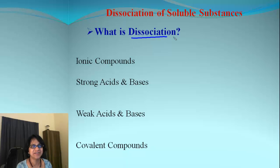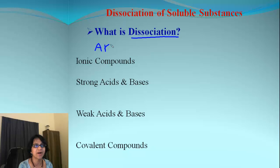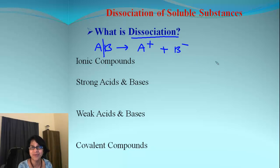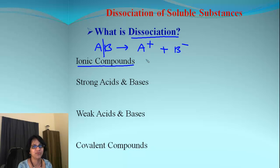What exactly do we mean by the term dissociation? It means splitting a compound into its corresponding ions. So if you have a compound A and B, when that dissociates we end up getting a positive ion A+ and a negative ion B−.